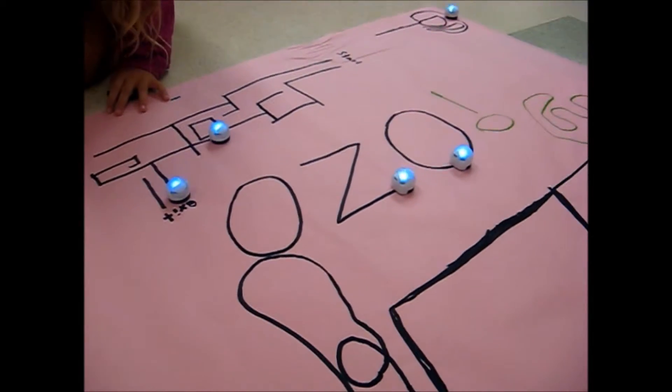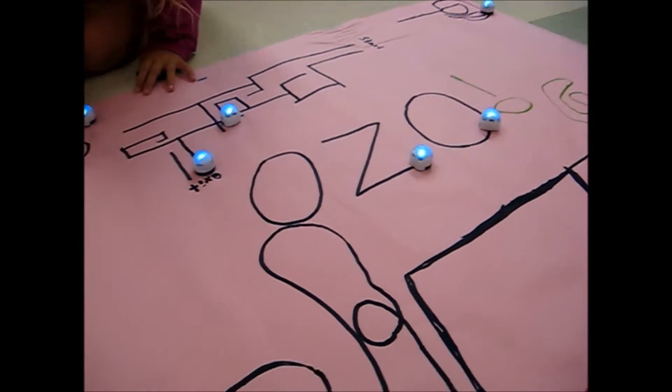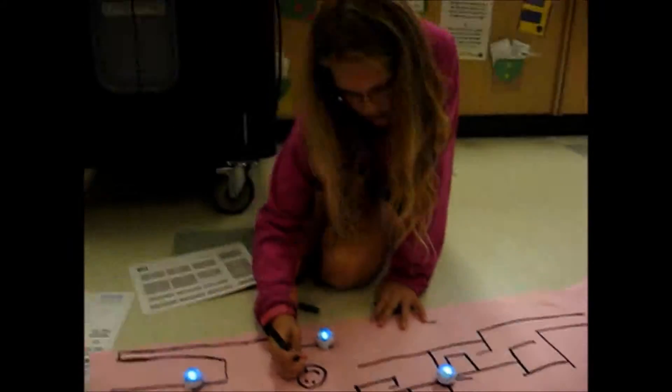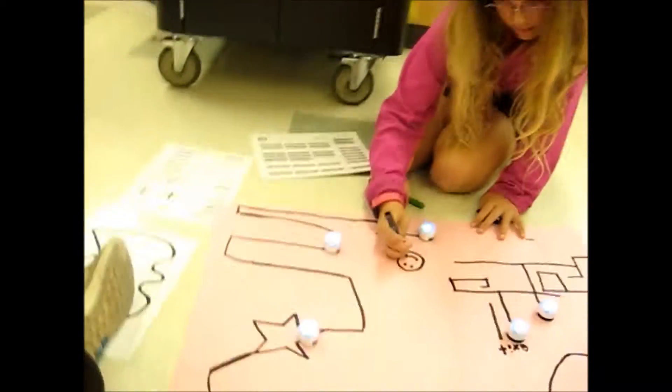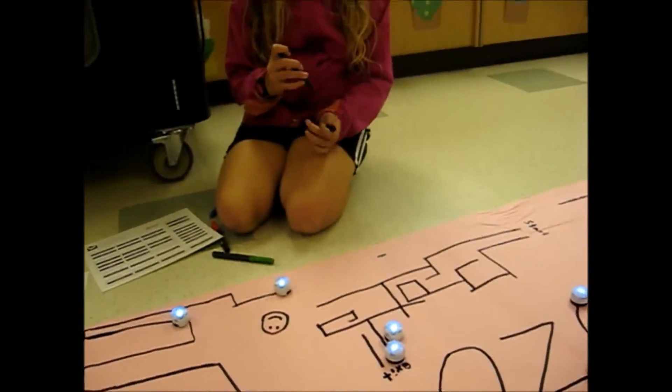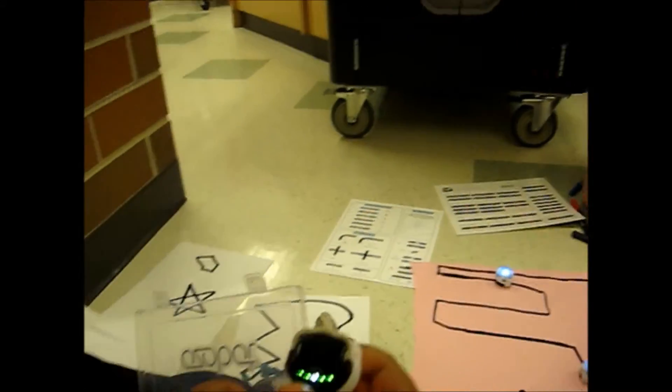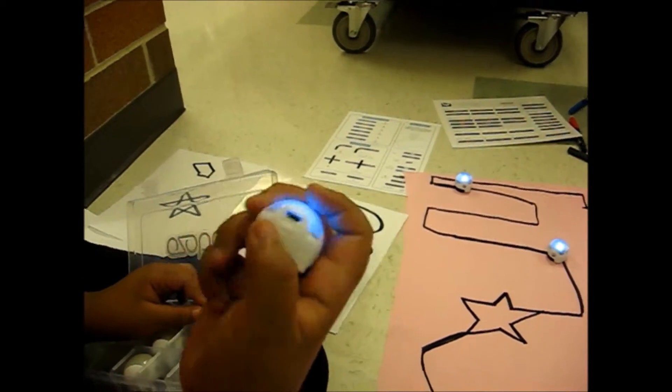I wonder if we were completely in the dark, could the Ozobots find their lines? They would. They would still find their lines? Yes. Tell me why. They have these scanners and it lights up. So it can find its way. It's like a nightlight.